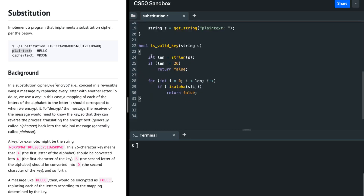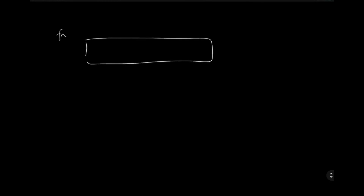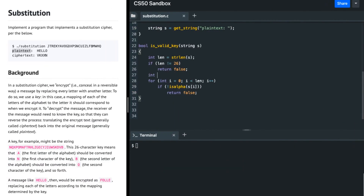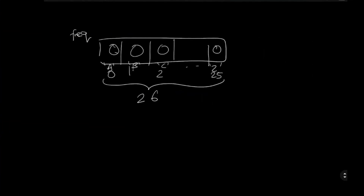After doing this, the function seems complete, but there's one issue: what if we are given duplicate keys? According to the problem spec, we should not allow duplicate keys. To handle that, I'm going to take a frequency array of size 26 and initialize all blocks with zero — counting how many times each letter appears.